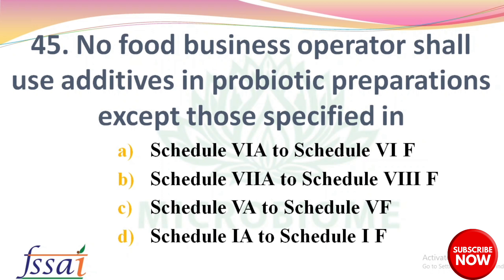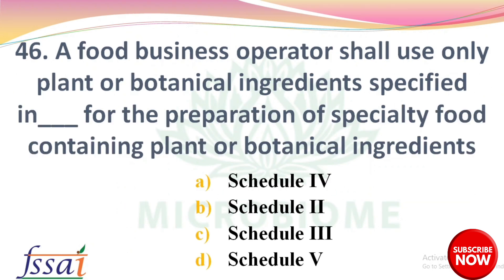Next question: no food business operator shall use additives in probiotic preparations except those specified in — options: Schedule 6A to 6F, Schedule 7A to 8F, Schedule 5A to 5F, Schedule 1A to 1F. The right answer is option C, Schedule 5A to 5F. Next, a food business operator shall use only plant or botanical ingredients specified in dash for the preparation of specialty food containing plant or botanical ingredients — options: Schedule 4, 2, 3, 5. The right answer is option A, Schedule 4.